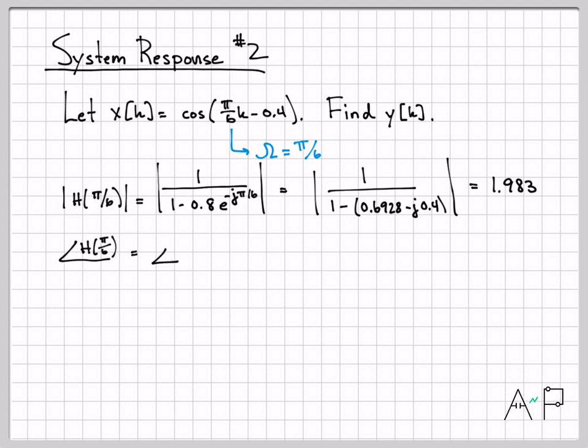And then the phase response, something very similar, we need to compute the angle of this quantity. So that's the angle of the numerator minus the angle of the denominator, and you get minus 0.916 radians.